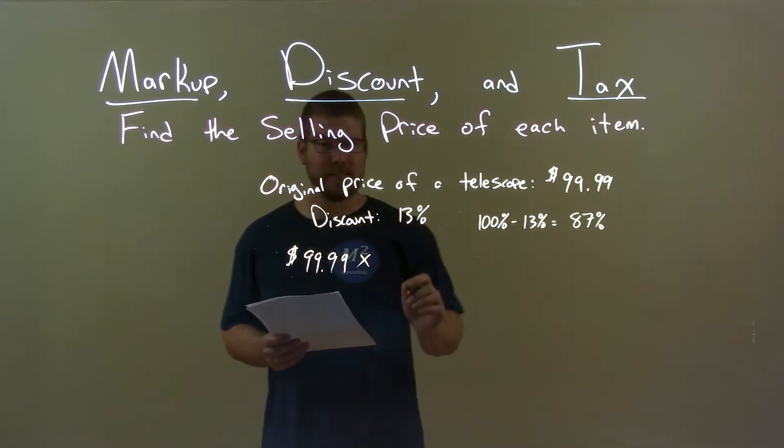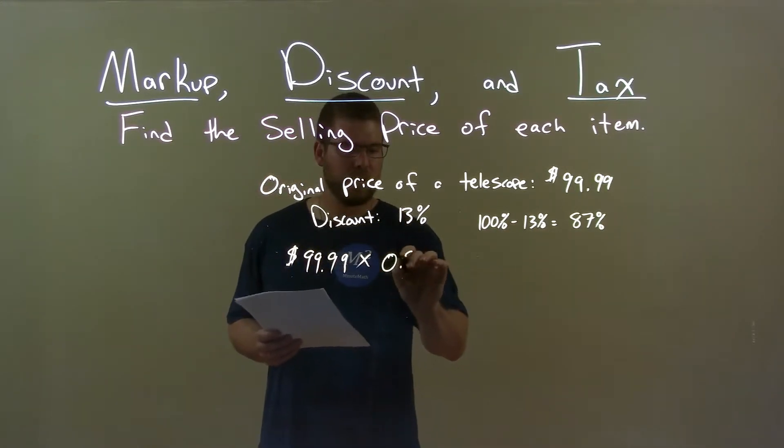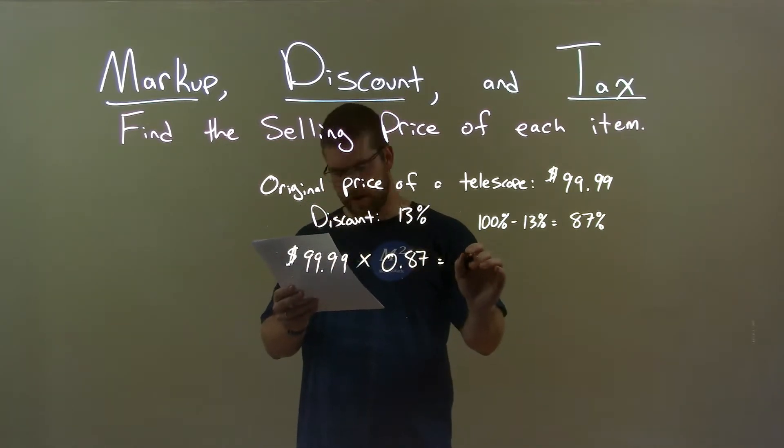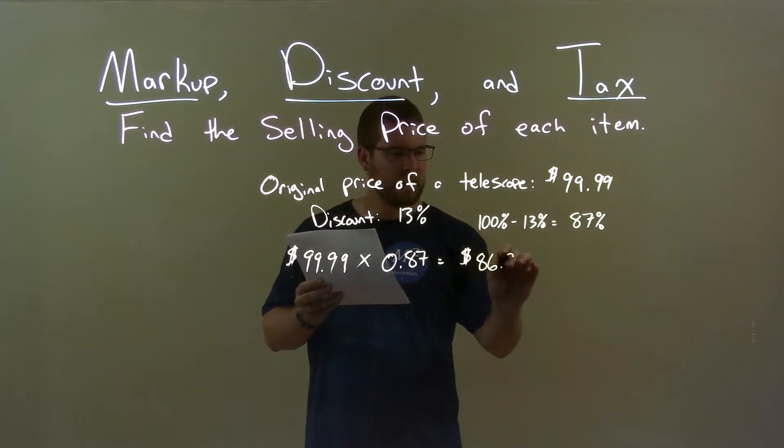We multiply that by 87% as a decimal, 0.87, and that gives us a final price, a discounted price of $86.99.